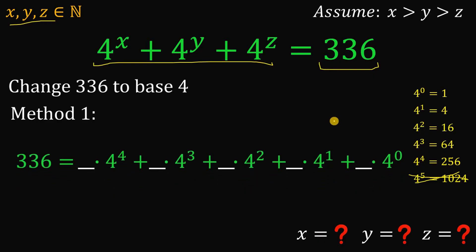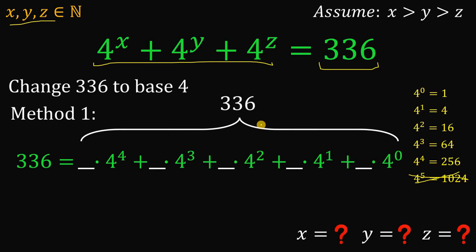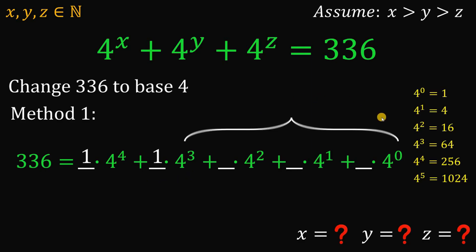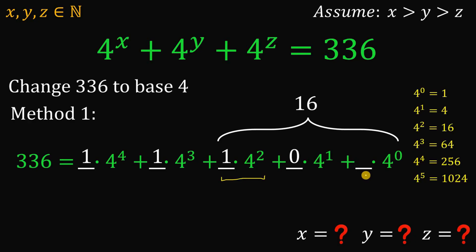Now, 336 can be written in this format, and the left-hand side is equivalent to 336. How many 4 raised to the 4th power are there in 336? That's only one, because 336 minus 256 is just 80. How many 4 cubed (or 64) are there in 80? That's only one, because 80 minus 64 is just 16. How many 4 squared (or 16) are there in 16? There's only one. How many 4 raised to 1? Zero. And how many 4 raised to 0? Also zero.